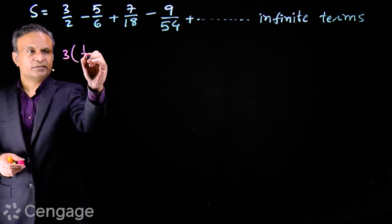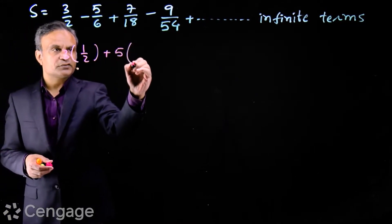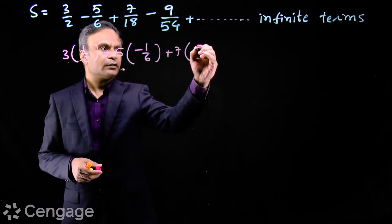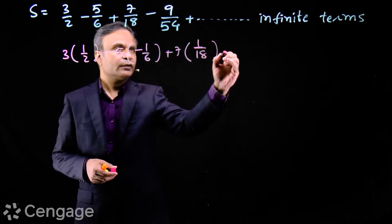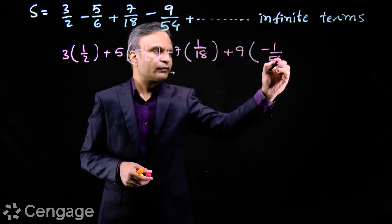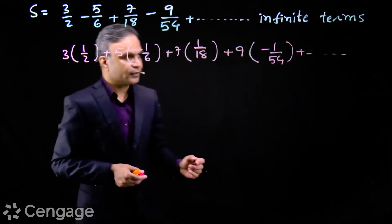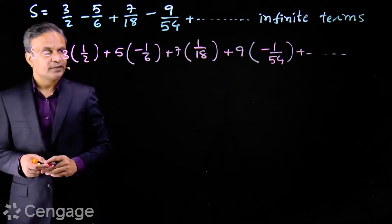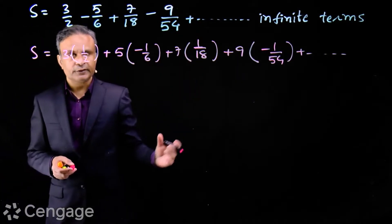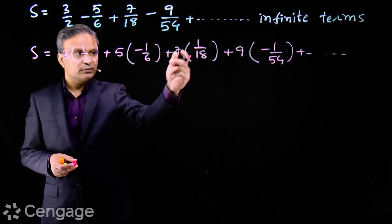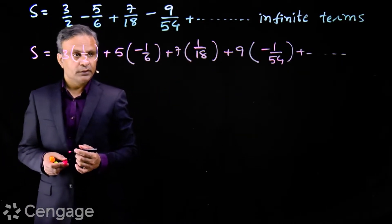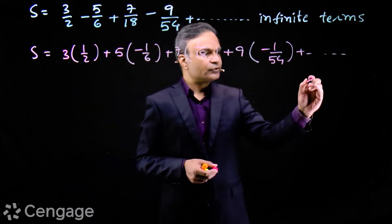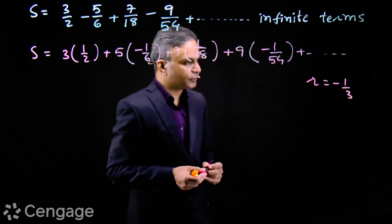So we rewrite the series as: 3(1/2) + 5(-1/6) + 7(1/18) + 9(-1/54) and so on. Now this is visibly an AGP. The AP part is 3, 5, 7, 9 and the GP part is 1/2, -1/6, 1/18, -1/54, where the first term is 1/2 and the common ratio r is -1/3.